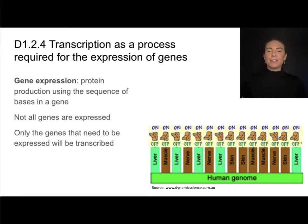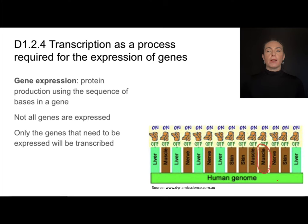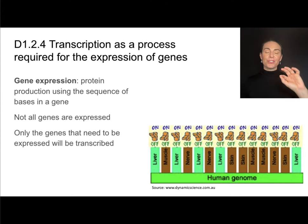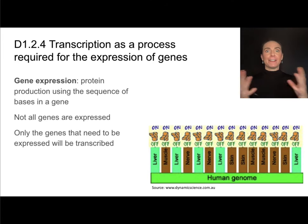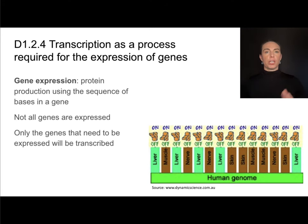liver cells are going to turn on all of the genes that they need in order to be a liver cell and do what liver cells do. They are not going to express the genes for how to be a muscle cell or for the functions of a skin cell. All of the cells in an organism contain the full genome; it's just that not all genes are expressed. If you need to express a gene, then you need transcription to take place first.